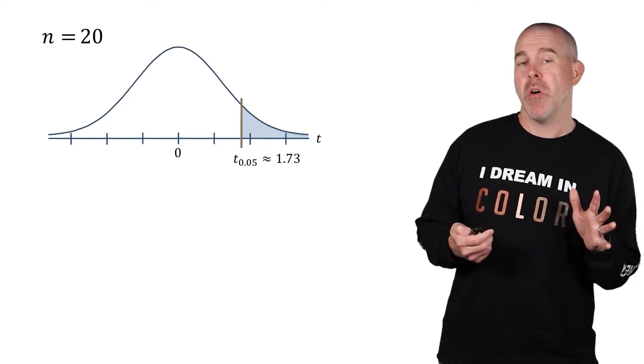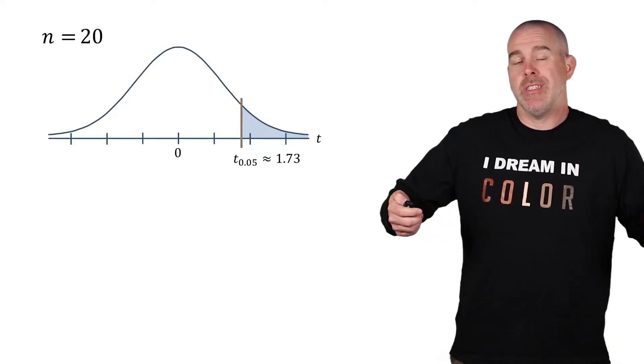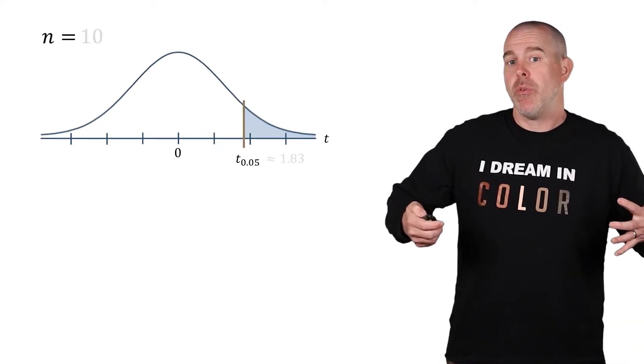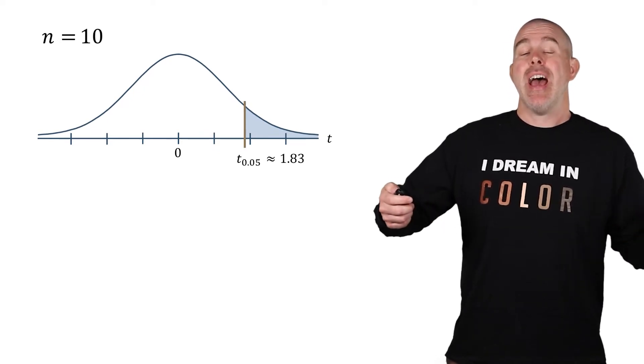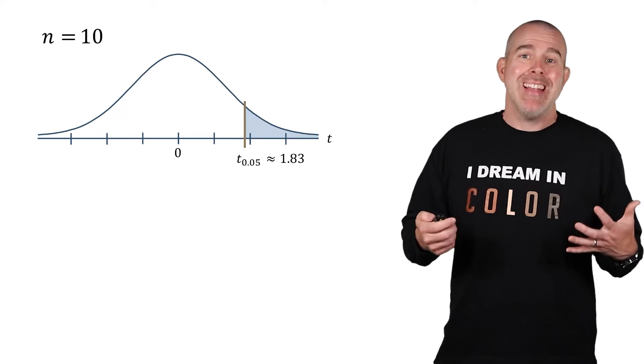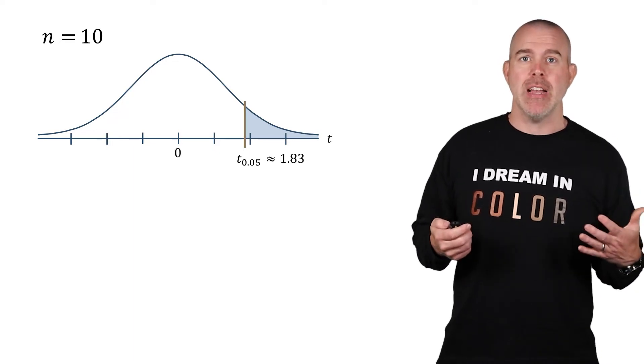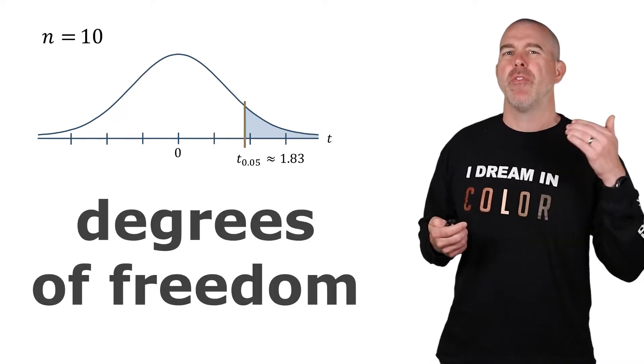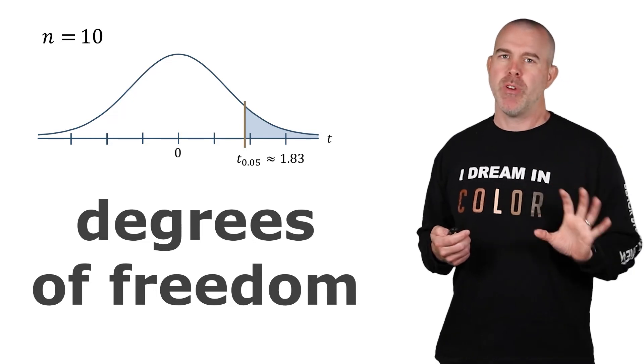If you get an N is 10, now T sub 0.05 is 1.83. So it depends on this sample size and it's this degrees of freedom idea. We've talked briefly about this before.